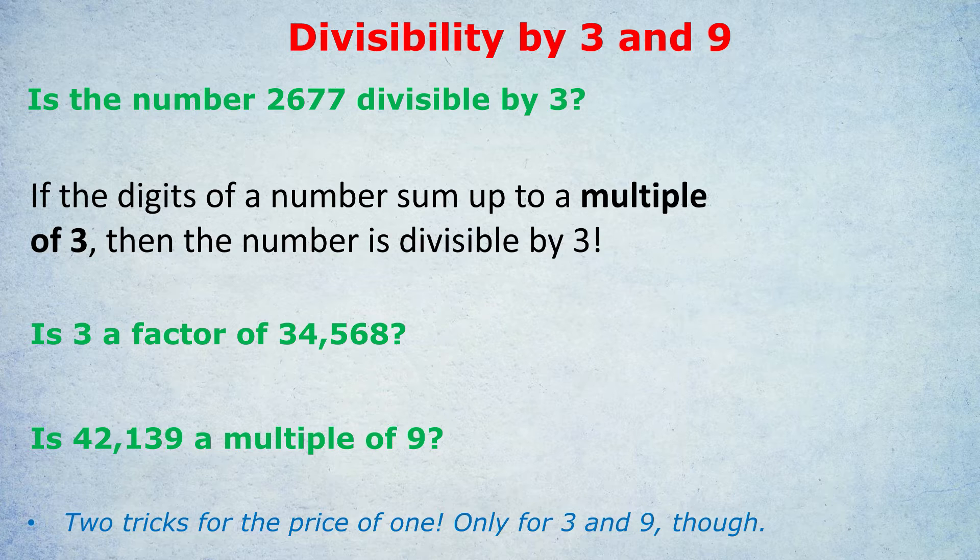Don't worry, we are going to see examples where it is divisible. I just thought I'd test out on numbers which are not necessarily divisible. If 42,139 had added up to 27 in its digits, then it would be a multiple of 9. So that's a trick for divisibility by 3 and by 9. Add up the digits and check whether it's a multiple of 3 or 9 respectively.